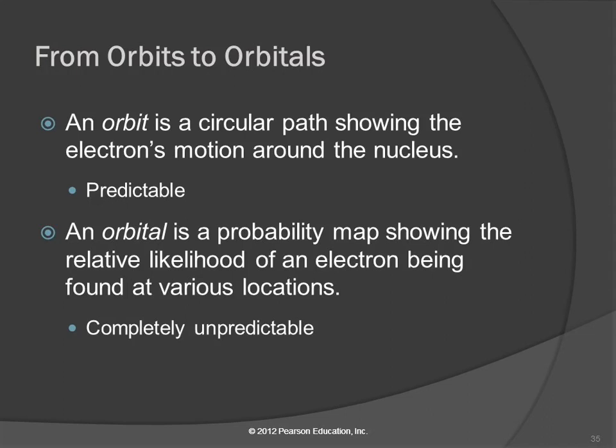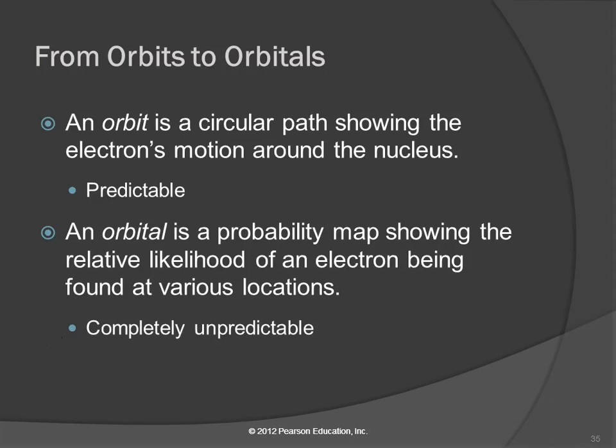We need to understand the difference between orbits and orbitals. An orbit is a circular path — like the orbit of a planet around the sun. In one of my classes, a student raised his hand and asked how much telescopes cost; he'd gotten off on the solar system and was thinking about stargazing. I said, I understand that you daydream in here, but don't ask me to price toys for you. Electrons going around the nucleus in a predictable orbit — unfortunately, that's not how it actually is. An orbital is a probability map showing the relative likelihood of where an electron might be found. Completely unpredictable.